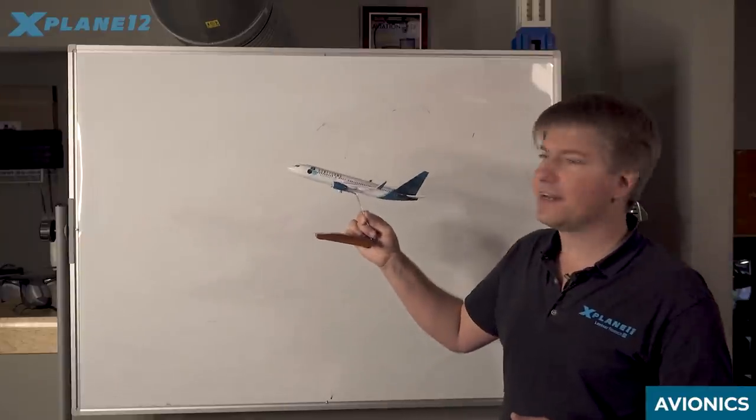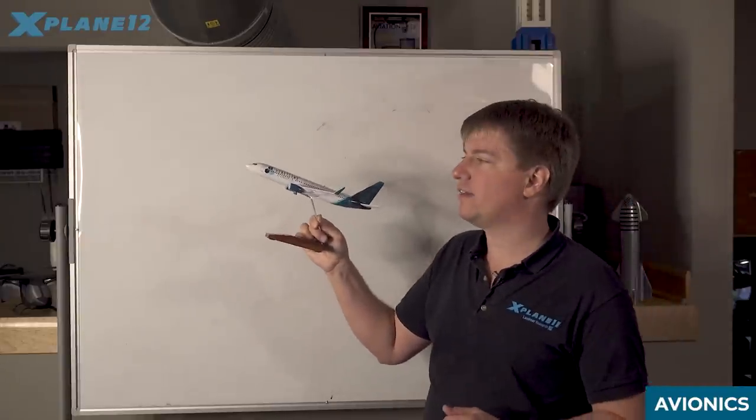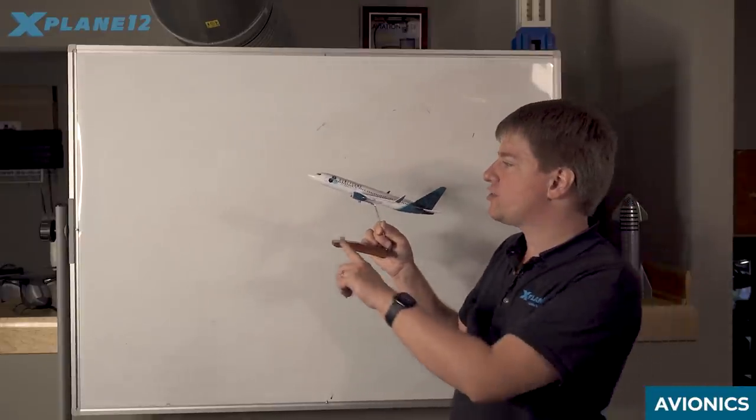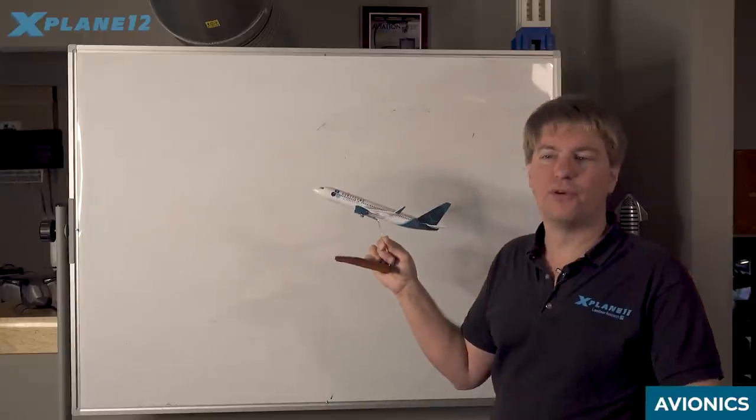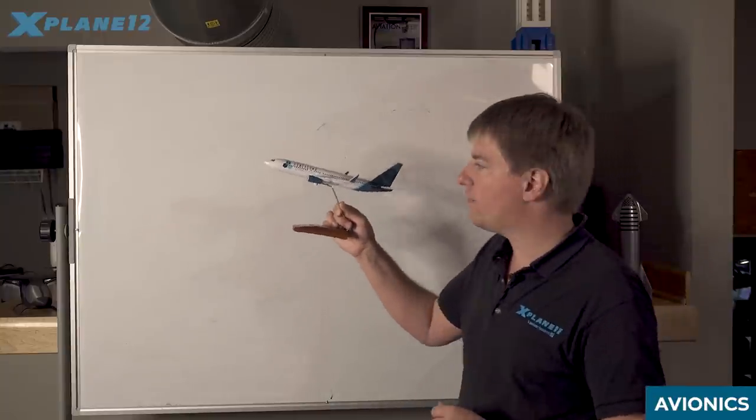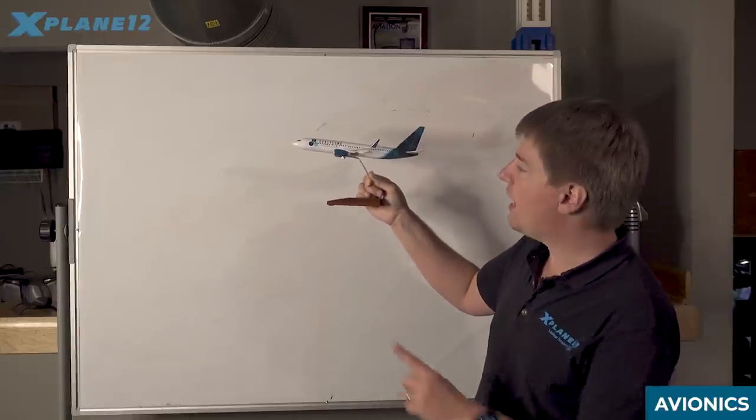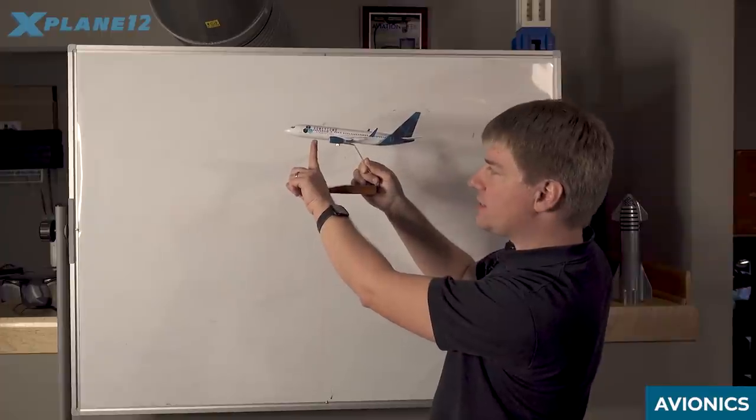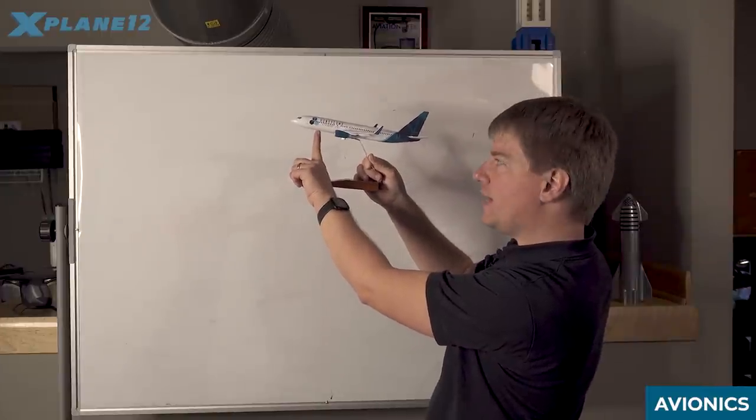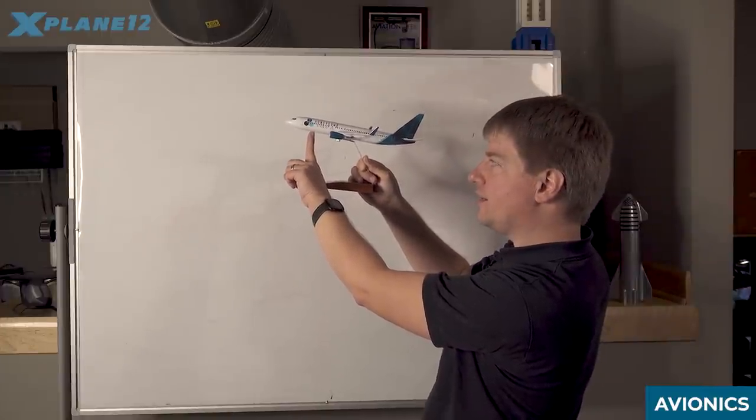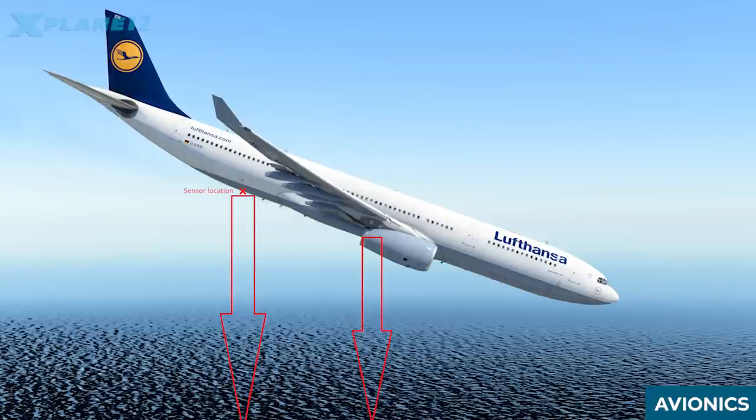In Planemaker 12, designers can also specify the location of various sensor points on the aircraft. For example, the position of the radio altimeter. What happens in real life is that the radio altimeter sensor is often located somewhere in front of the gear, so that the readout of the radio altimeter will depend on the deck angle of the aircraft.